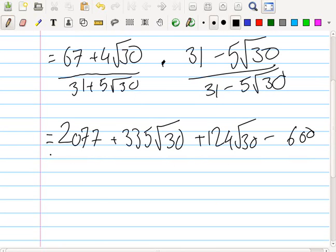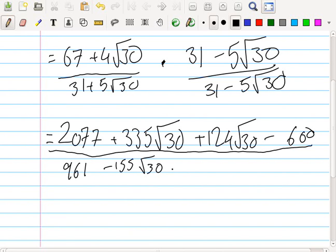All right. 31 times 31. What's that? 9, 6, 1. And then 31 times 5 is 155. Yeah. Okay. So, minus 155 root 30. Then plus 155 root 30. And then 30 times 5 is 150. All right. That's way off. 5 times... No, sorry. Because it's 5 times 5 is 25. 25 times 30 is 750. With a minus. Now, that's great because these cancel as normal.